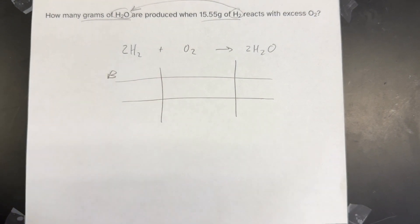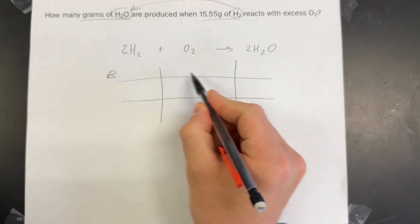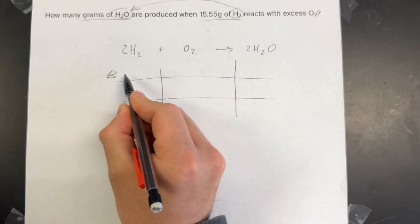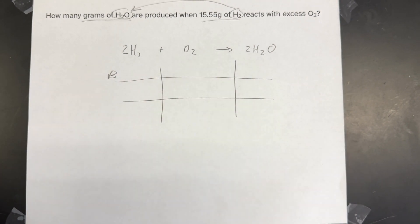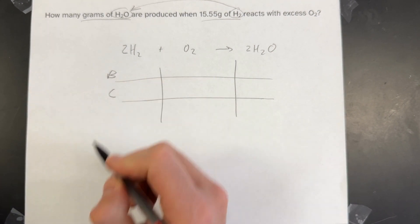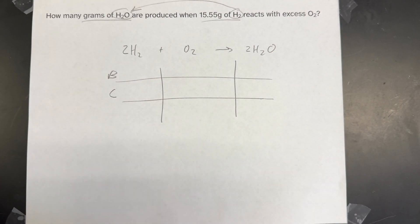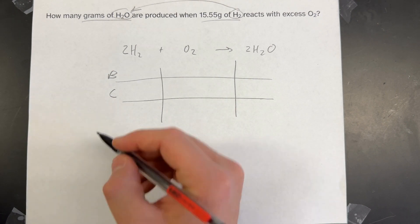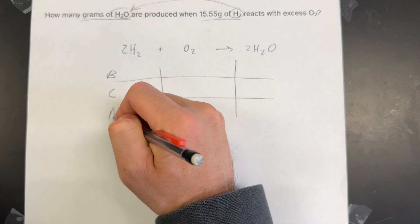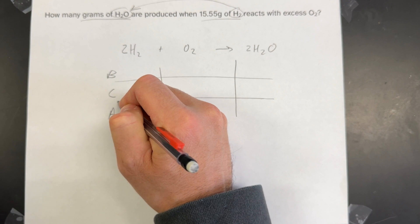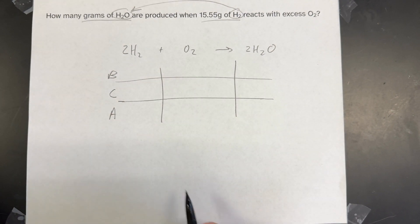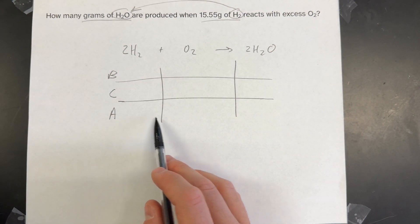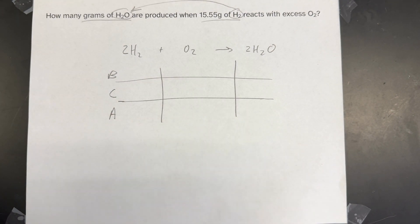B stands for before — that's how much of each reactant or product you have before the reaction. C stands for change, which factors in how each reactant or product is changing over the course of the reaction. And A stands for after, representing how much reactant or product we have after the reaction has occurred.